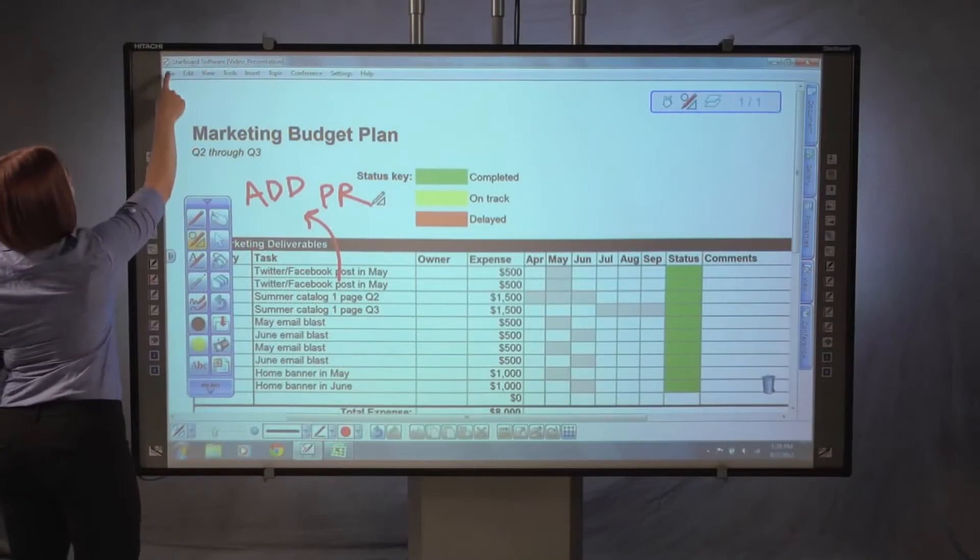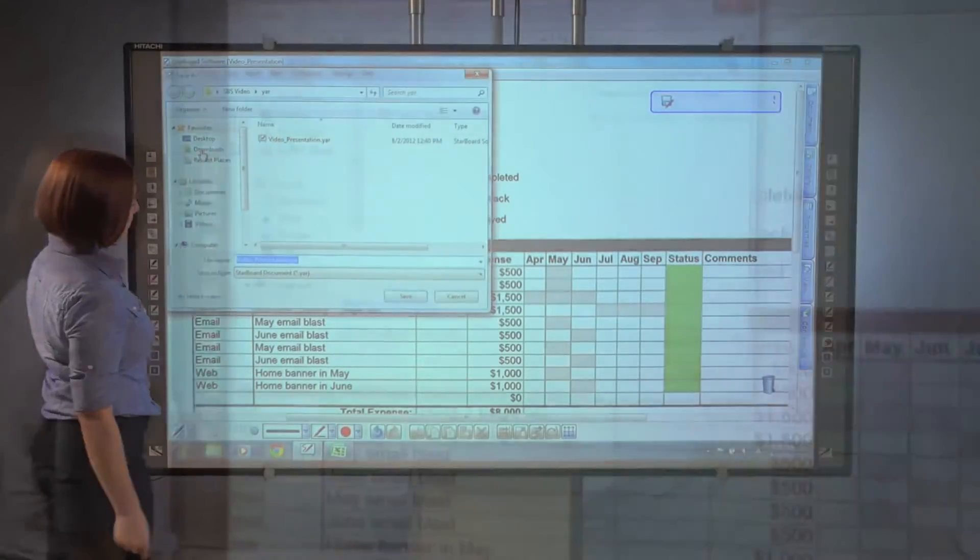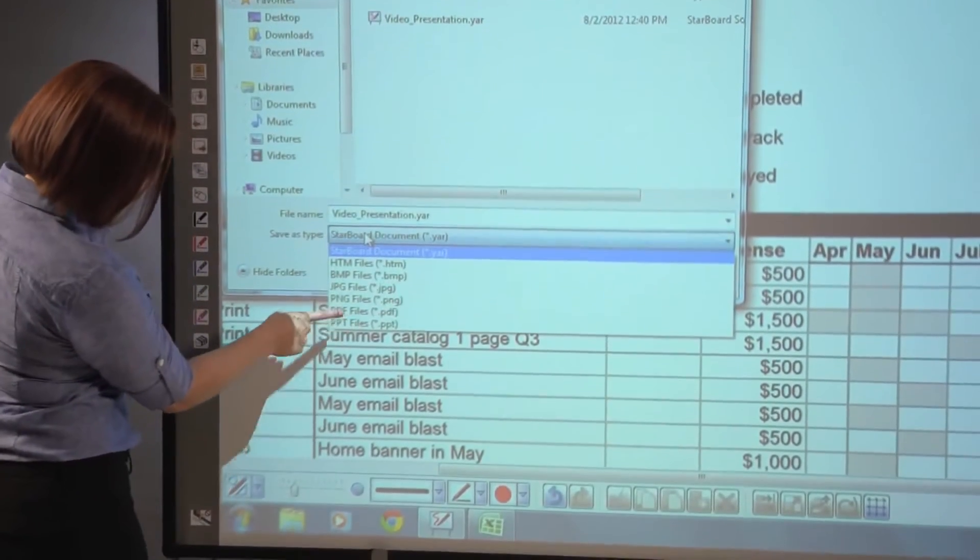This Print to Starboard feature gives you the option of saving your work in a variety of file formats, such as JPEG, PDF, or PowerPoint.